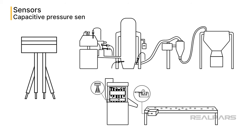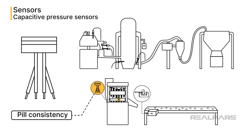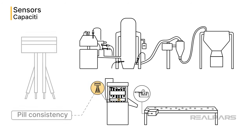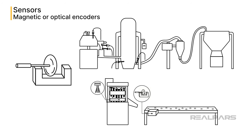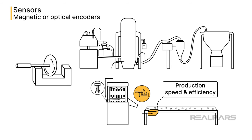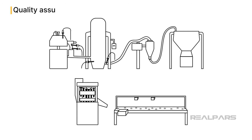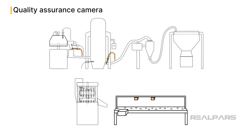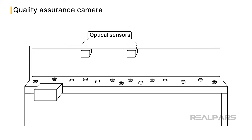Capacitive pressure sensors are commonly used for monitoring pill compaction in the tablet press. The correct pressure ensures that each pill has uniform consistency and does not break apart easily. Magnetic or optical encoders are installed on the product conveyor to monitor belt speed. The rate at which pills are delivered to the packaging line can affect production speed and efficiency. Also of importance are optical sensors that can provide visual evidence of product quality. These cameras are the eyes of the operation.